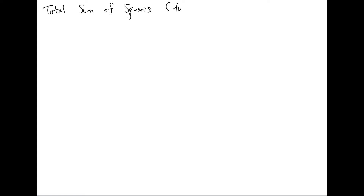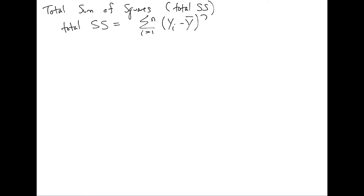So we define three things. The first is the total sum of squares, or total SS. These are the sum of the squared deviations of y from its mean. The total sum of squares is equal to the sum over all observations i equals one to n of (yᵢ minus ȳ) squared — the sum of the squared deviations of y from its mean.